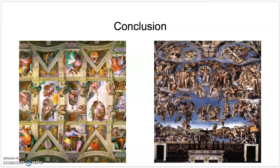On this ceiling painting, he used geometric shapes and a complementary color scheme to have a very bright painting. However, in The Last Judgment, it is an analogous color scheme, and there is only implied lines that separate heaven and hell from the rest. These are my works cited, and thank you for your time.